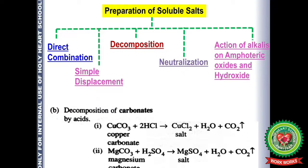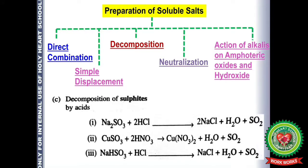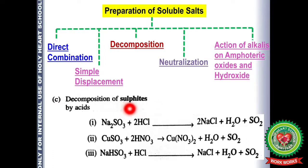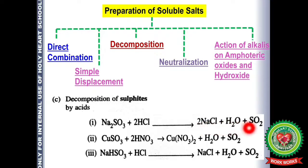The third type of decomposition is of sulfites by acid. Sulfite anion is SO₃²⁻; sulfate is SO₄²⁻; sulfide is S²⁻. When metal sulfites react with acid, the products are salt, water, and SO₂ gas — sulfur dioxide, which has a burning sulfur-like smell.